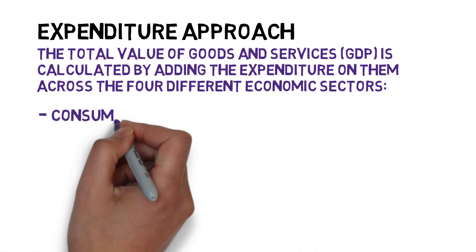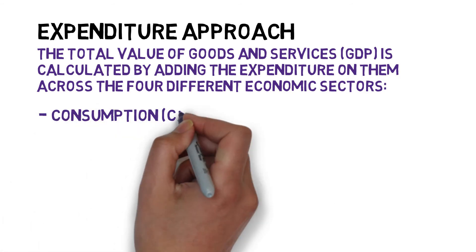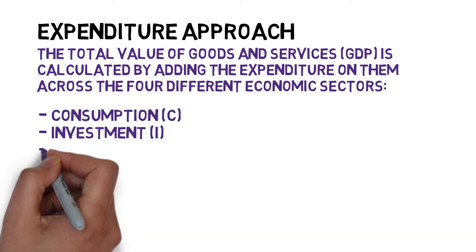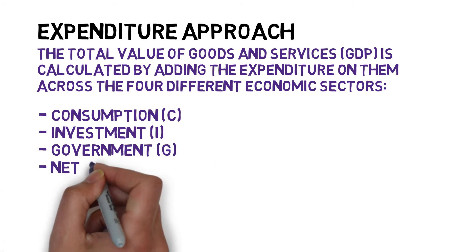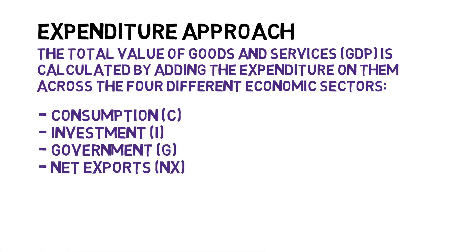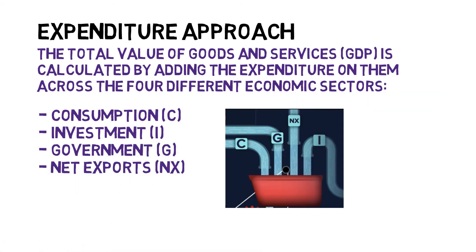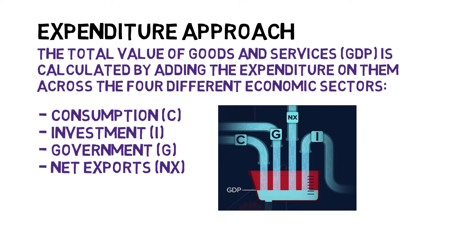The four economic sectors are consumption, investment, government spending, and net exports. You can visualize the expenditure approach through four pipes representing the sectors of the economy, and water flowing through them as money. The level of water in the tub is then GDP, the sum of the water flowing in each of the sectors.